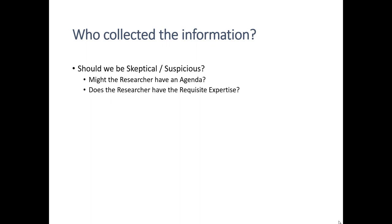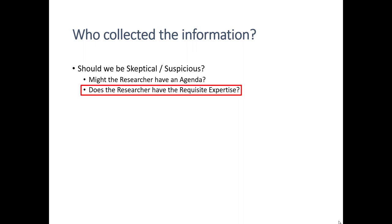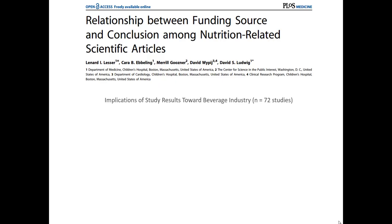As we're evaluating the source of the original research, there are two things that we're looking for. First, is there any evidence that that researcher may have had an agenda or a bias when conducting the research? Secondly, we're looking for evidence that the researcher actually has the requisite expertise necessary to properly conduct the research study. Here's an interesting study that illustrates why we should be suspicious when we have reason to believe that the people behind a study may actually have an agenda.